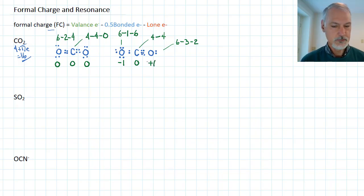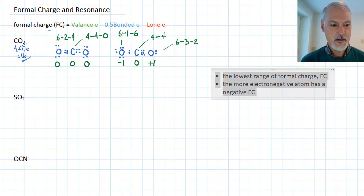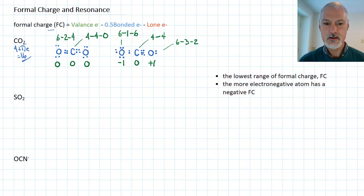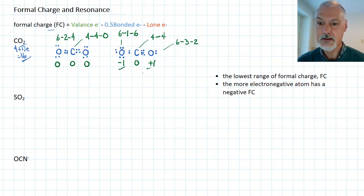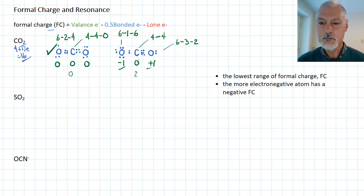Our general rule to determine which is the correct structure is to identify the structure that has the lowest range of formal charge. The asymmetric structure has a range from minus one to plus one — a range of two — while the symmetric double-bond structure has a range of zero. That makes the symmetric structure the accepted structure. This other one could exist in some resonance form, but the symmetric double-bond structure is the preferred structure of carbon dioxide.